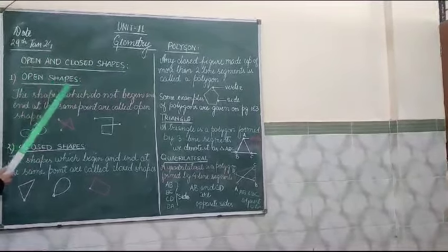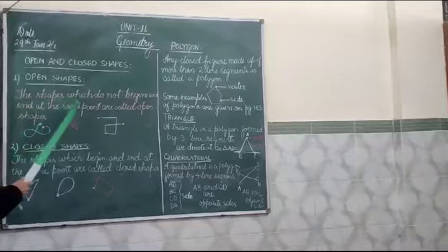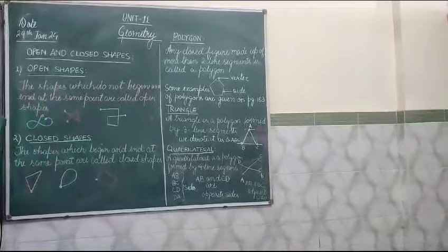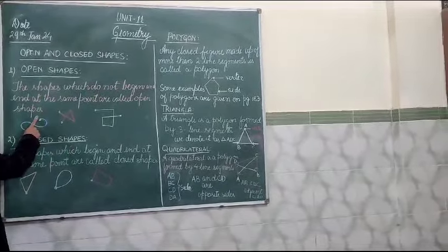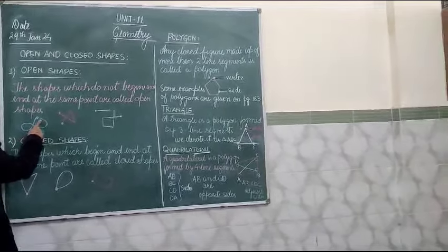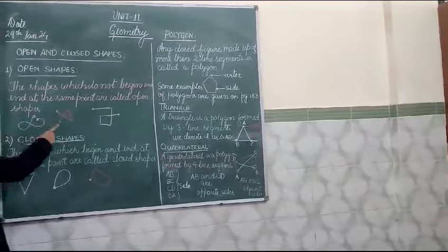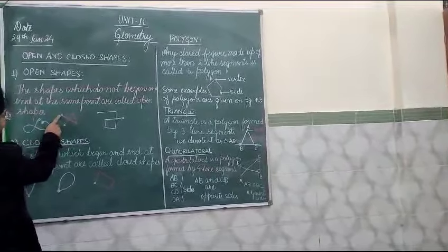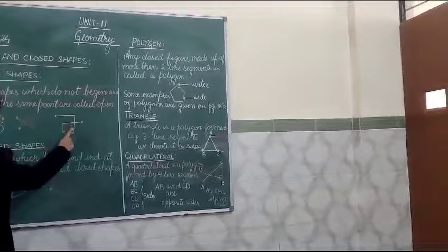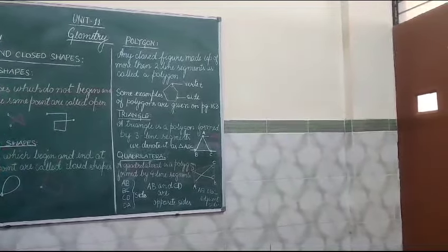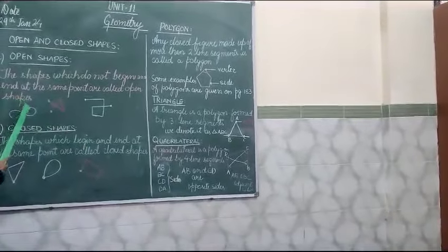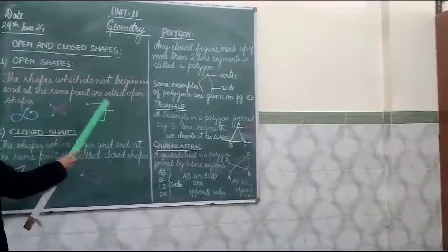Let us see what are open shapes. The shapes which do not begin and end at the same point are called open shapes. You can see here, this is the starting point and then this is the end point. So these two points are different, that is why this is known as an open shape. Similarly, these types of shapes which have two different starting and end points are known as open shapes.